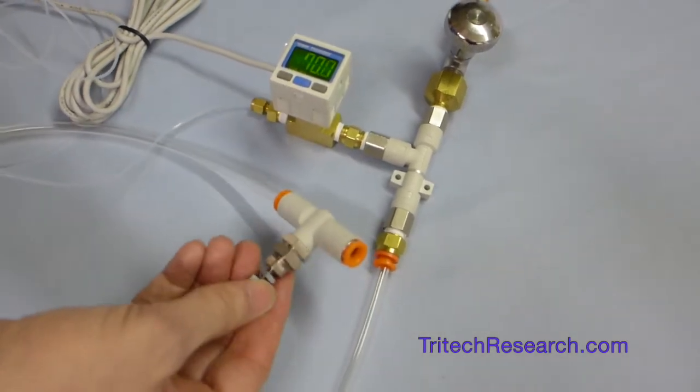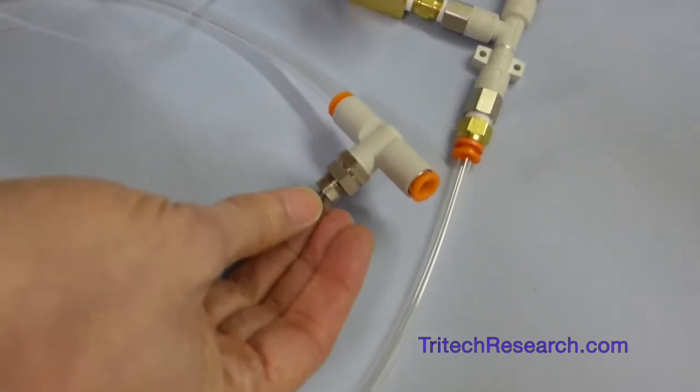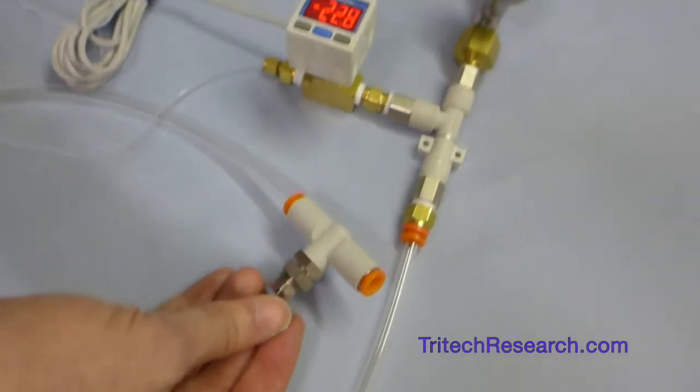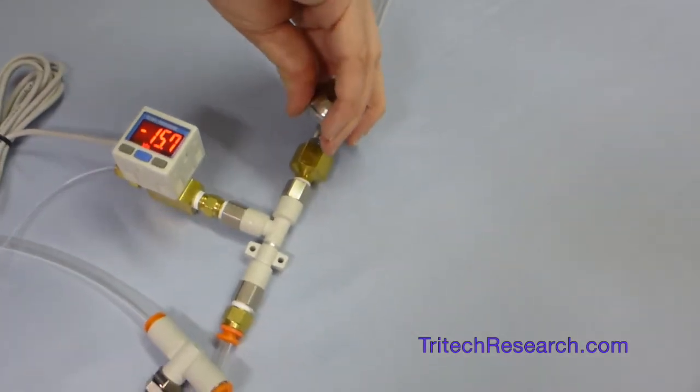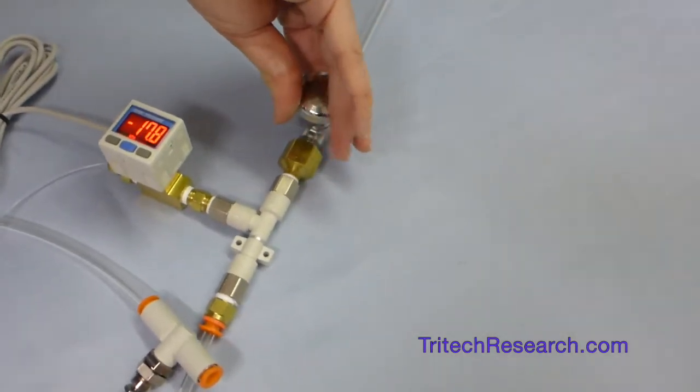So by adjusting this valve here, we can go from positive to negative pressure. And we can also restrict the flow here if we don't need a very strong negative pressure.